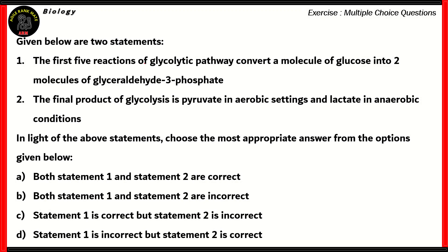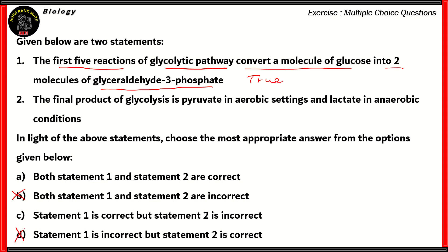Let's look at another question. Again, this is a statement-type question where we need to find out which of the two statements are correct. Statement 1: The first five reactions of the glycolytic pathway convert a molecule of glucose into two molecules of glyceraldehyde 3-phosphate. This statement is in fact true. Since statement 1 is correct, we can assume that options B and D are incorrect, because in both options B and D, they say that statement 1 is not true, whereas in fact it's correct.